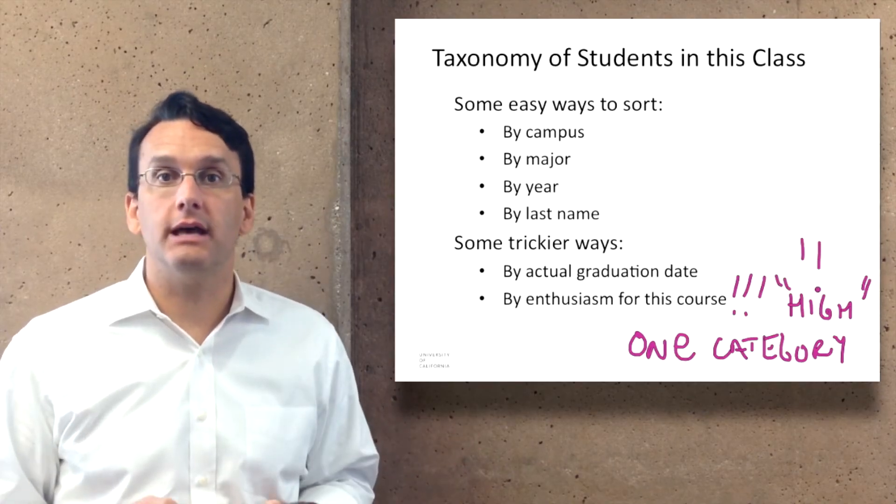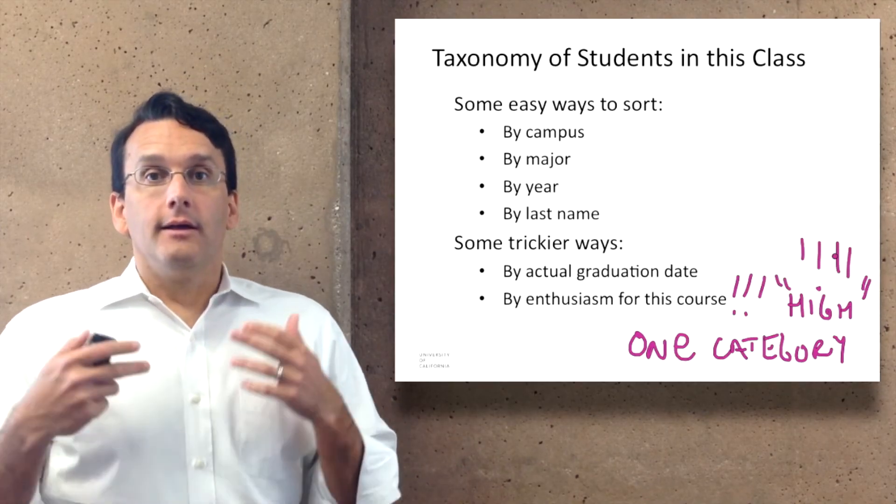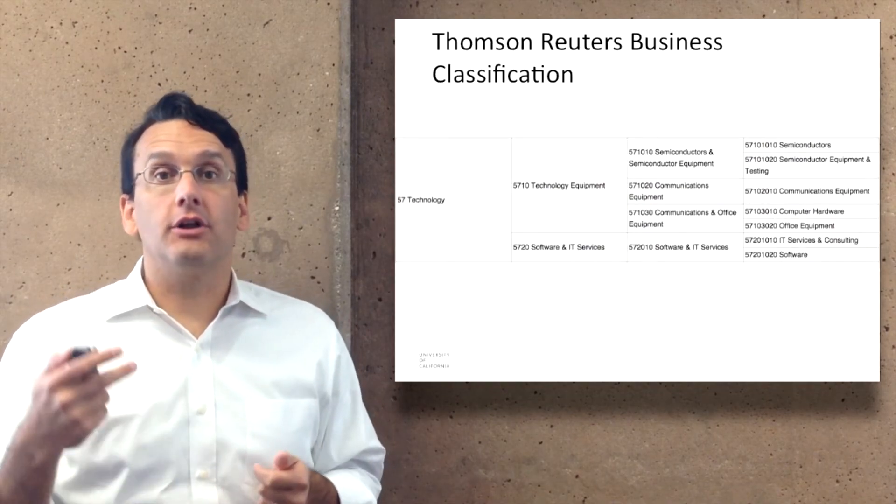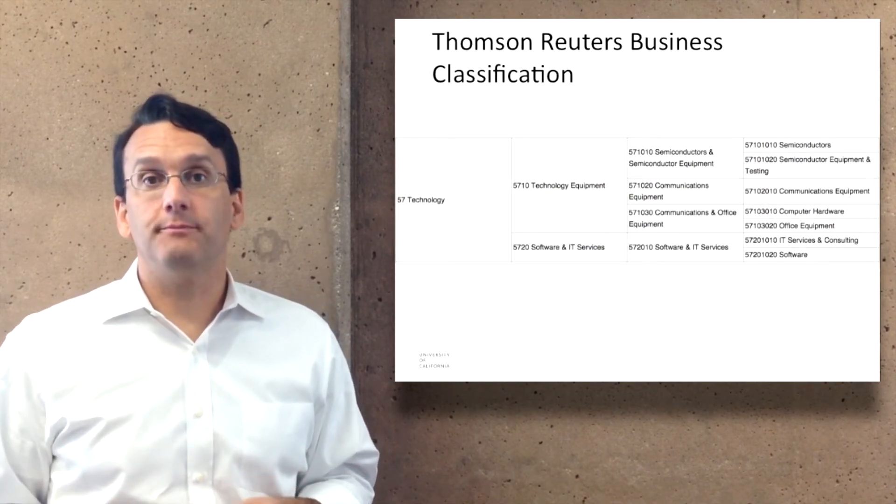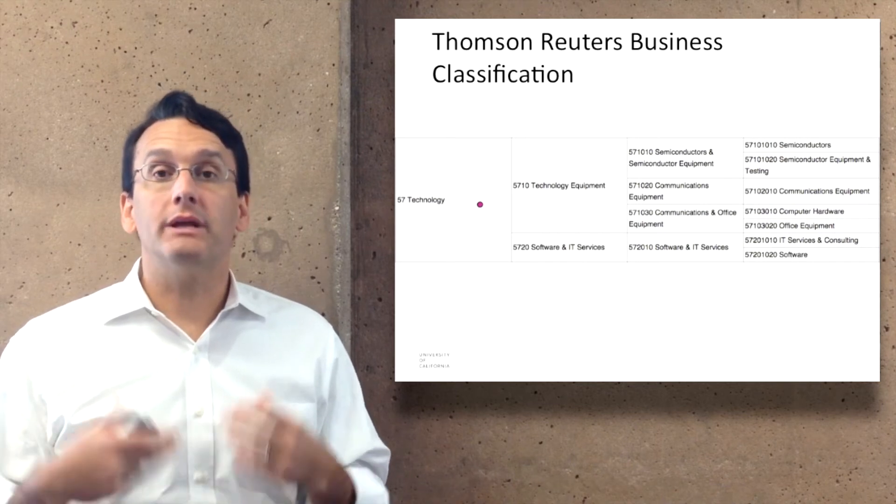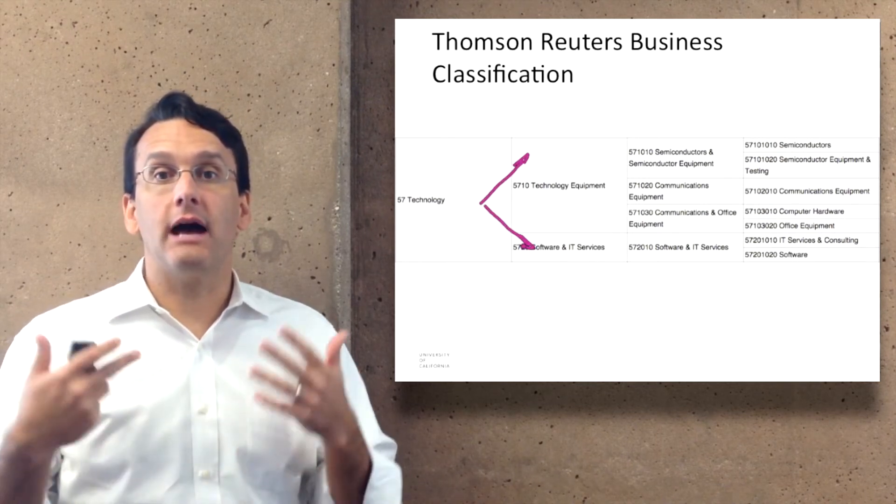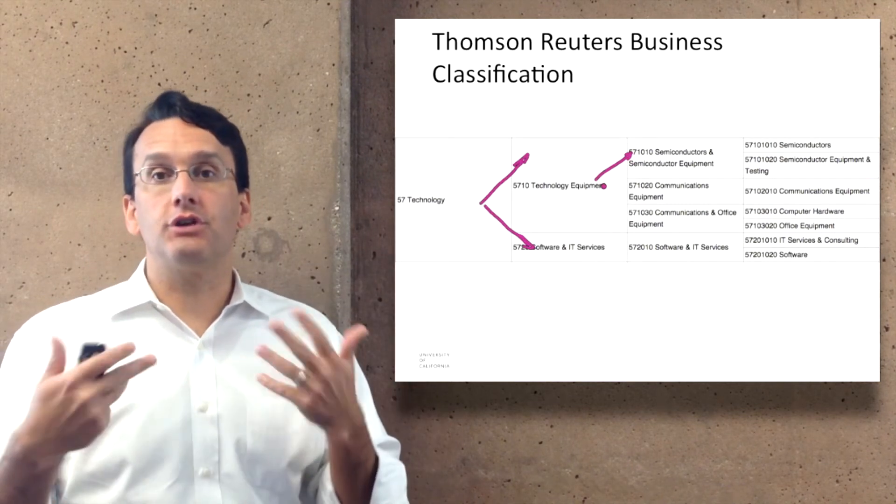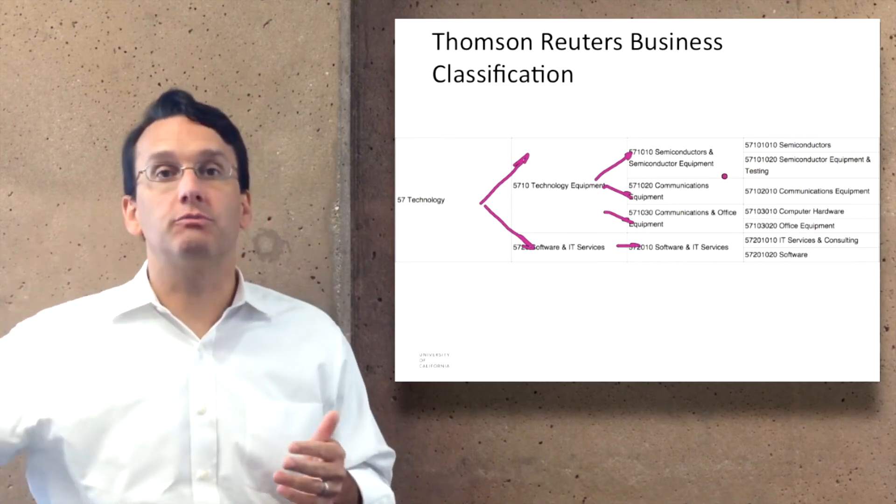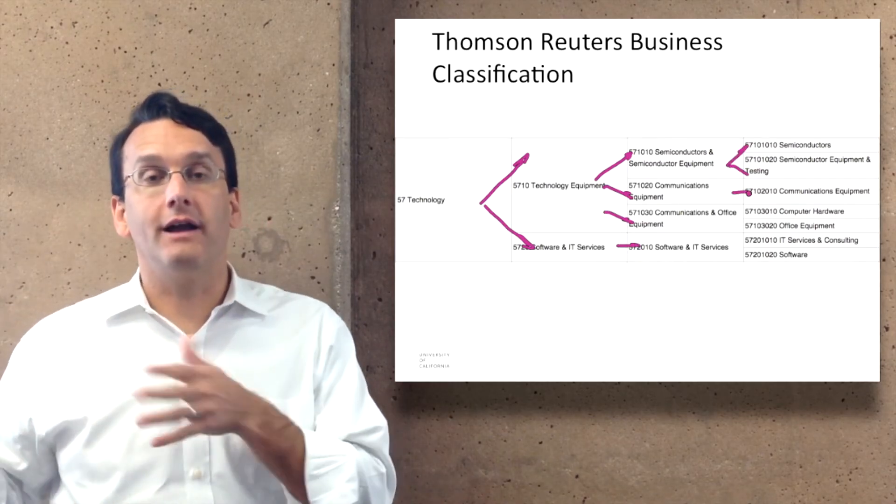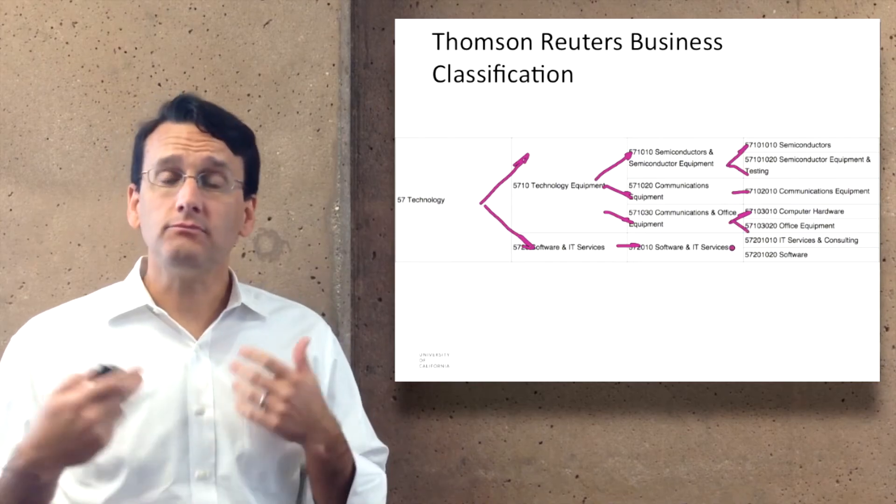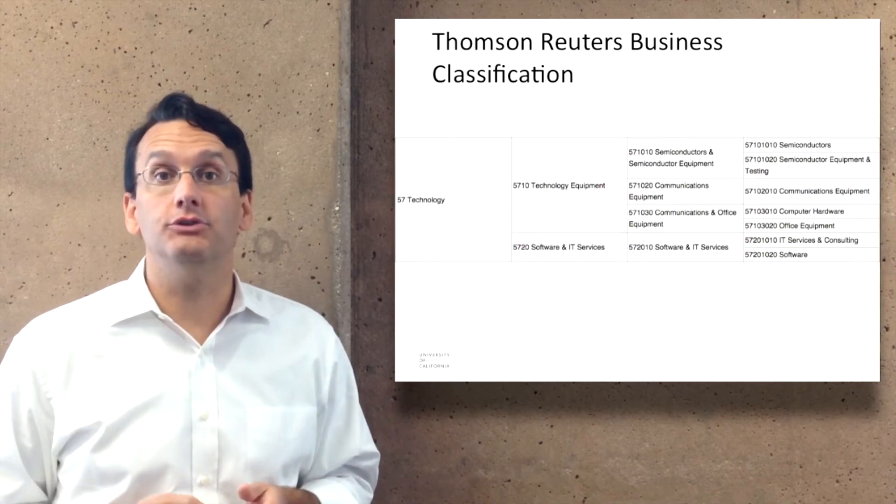Here we see a particular taxonomy: this is called the Thompson Reuters Business Classification. This is just a subset of it, but we can see that technology is broken down into technology equipment versus software and IT services, and each one of those is broken down into finer and finer detail. This is an example of a taxonomy being used out in the world.